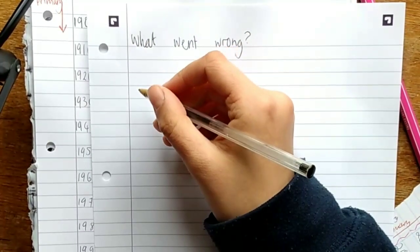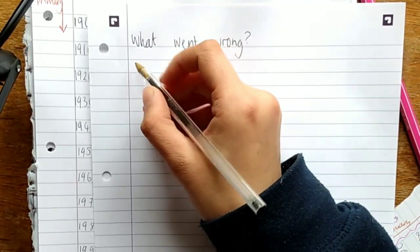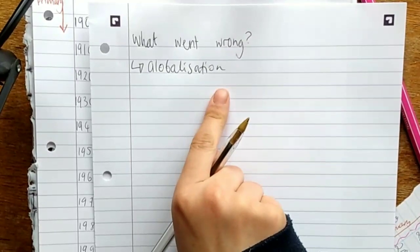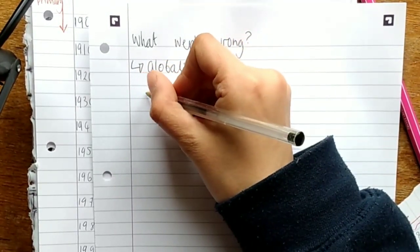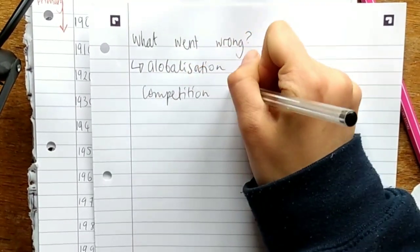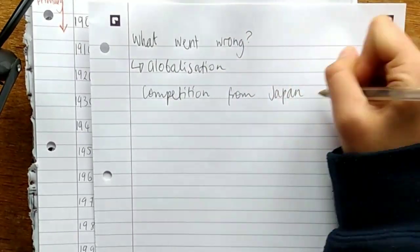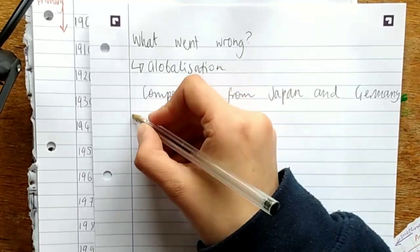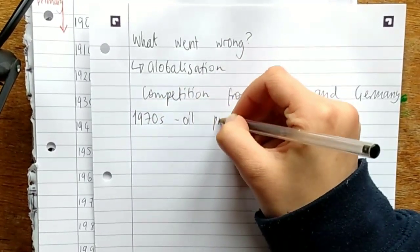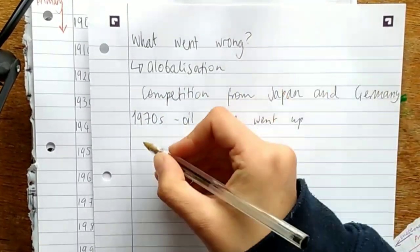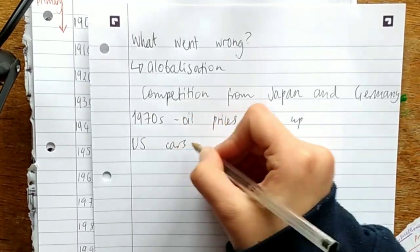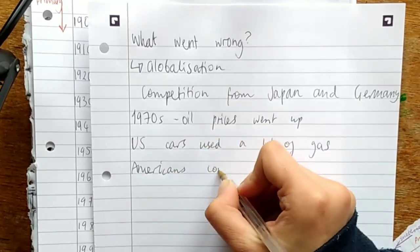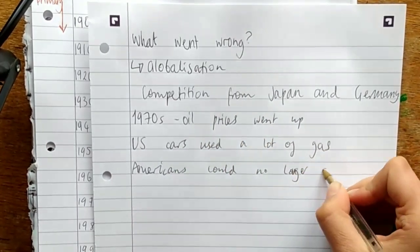Globalisation was really picking up in the 50s and 60s. More free trade between countries and between continents. There was competition from Japanese and German car manufacturers. In the 1970s, oil and gas prices rose, so petrol and diesel was a lot more expensive. Cars made in the US weren't very efficient and they used up a lot of gas. Americans could no longer afford American cars.